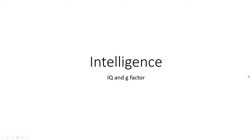I will talk a bit about intelligence and how we see intelligence in psychology and the science of psychology. Because a lot of people think that we have multiple intelligences or that we really don't know what intelligence is. But in psychology we say there's something called general intelligence and we know what it is and we can measure it. This general intelligence is the g-factor, general factor.